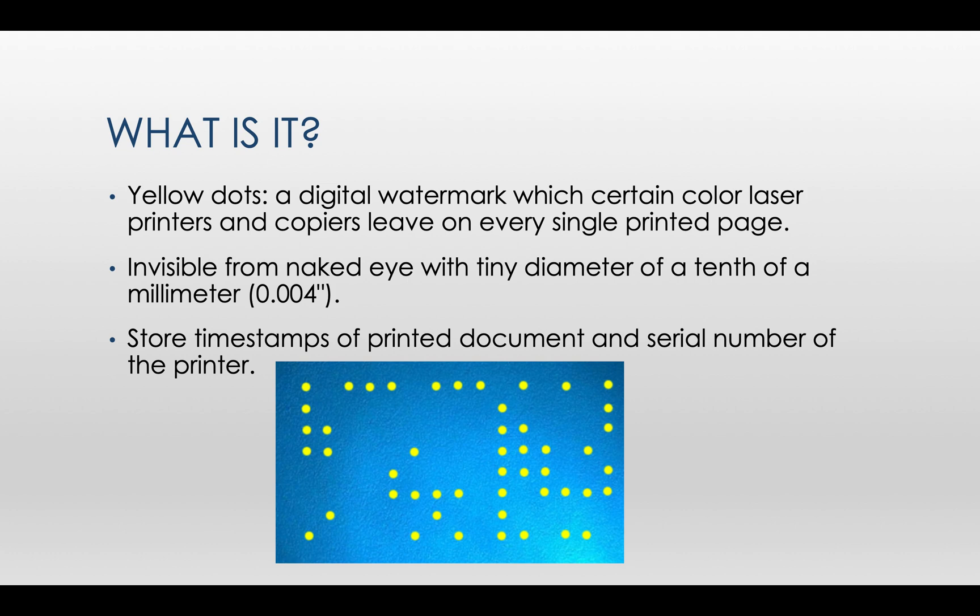So why haven't we seen this code? Because they are so tiny that human eyes cannot see them directly. These codes store information like timestamps of when the document is printed and the serial number of the printer. Thus it can be used to track the originator of the printer.